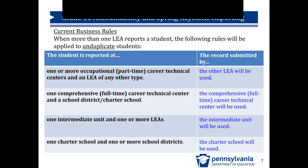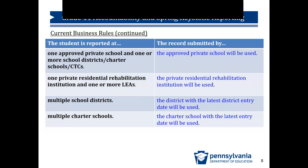Regarding IUs, if a student is reported by an IU and one or more LEAs, the records submitted by the IU will be used. For charter schools, if a student is reported by a charter school and one or more school districts, the charter school's records will be used. If a student is reported by an approved private school and one or more school districts, charter schools, or CTCs, the approved private school's records will be used. If reported by a PRRI and one or more LEAs, the PRRI's records will be used. If multiple school districts submit a record for the same student, the record from the district with the most recent entry date will be used. The same applies when multiple charter schools report the same student.